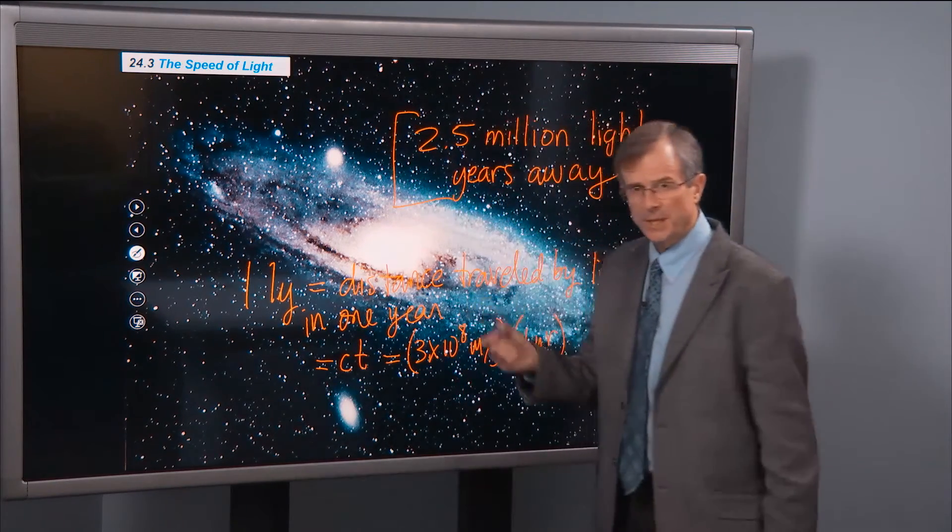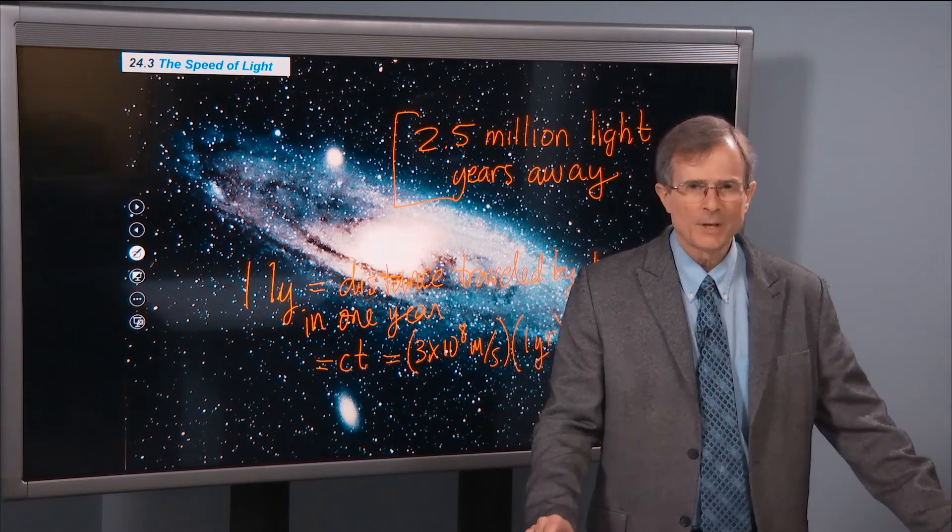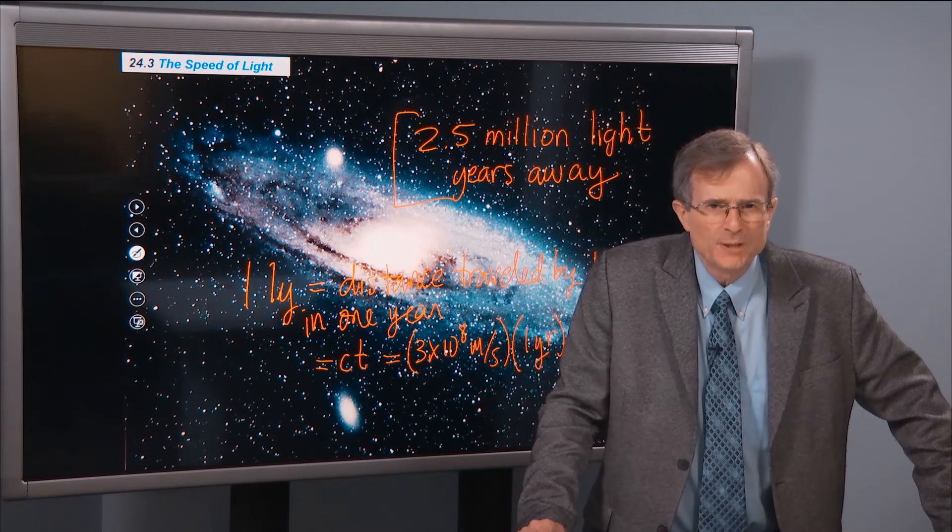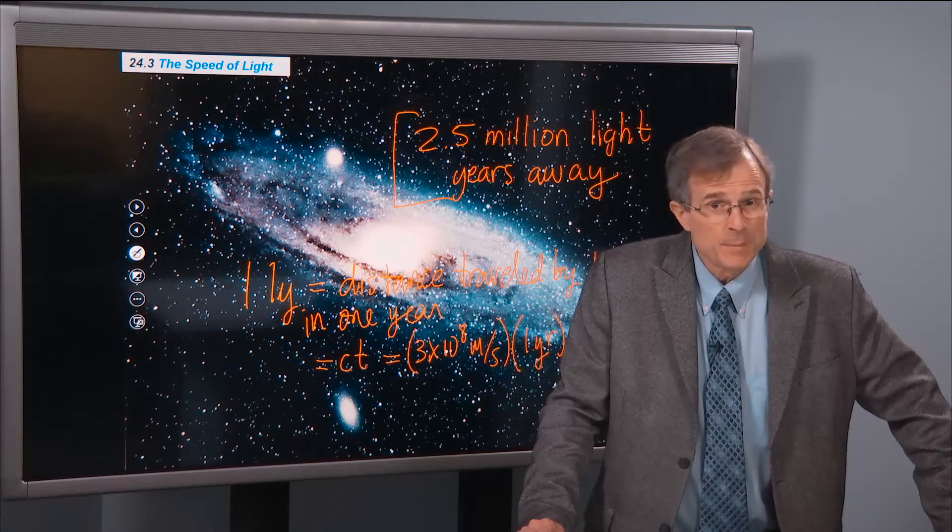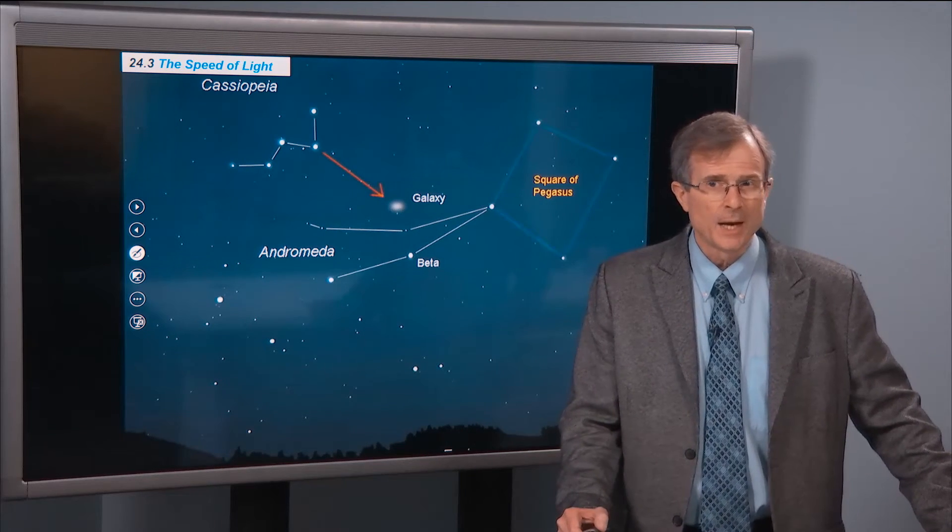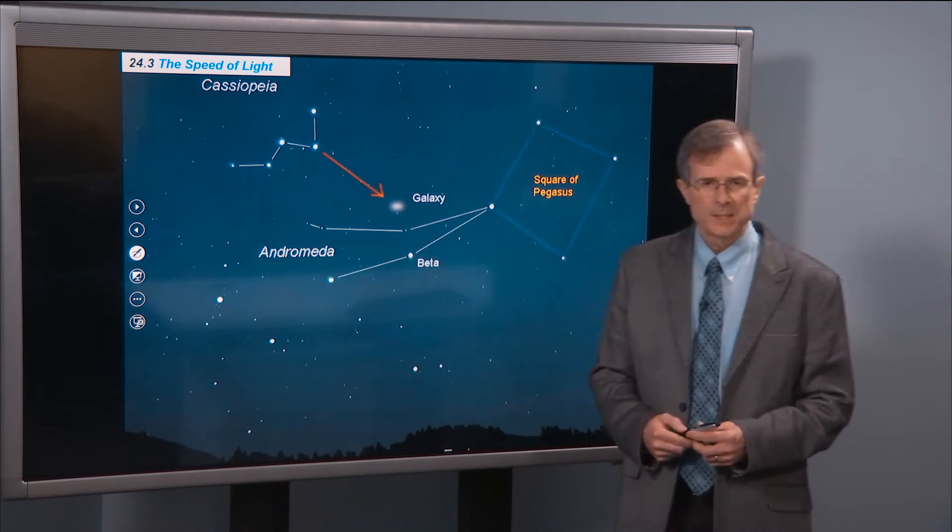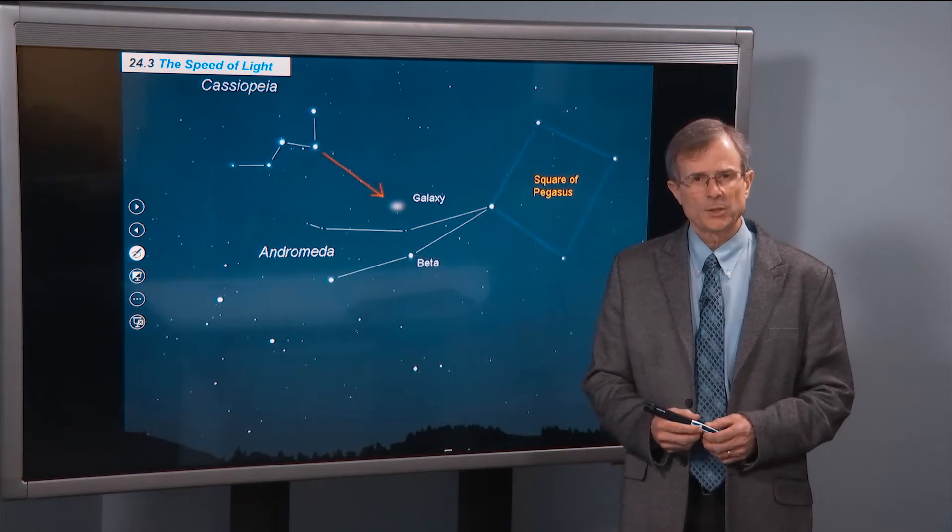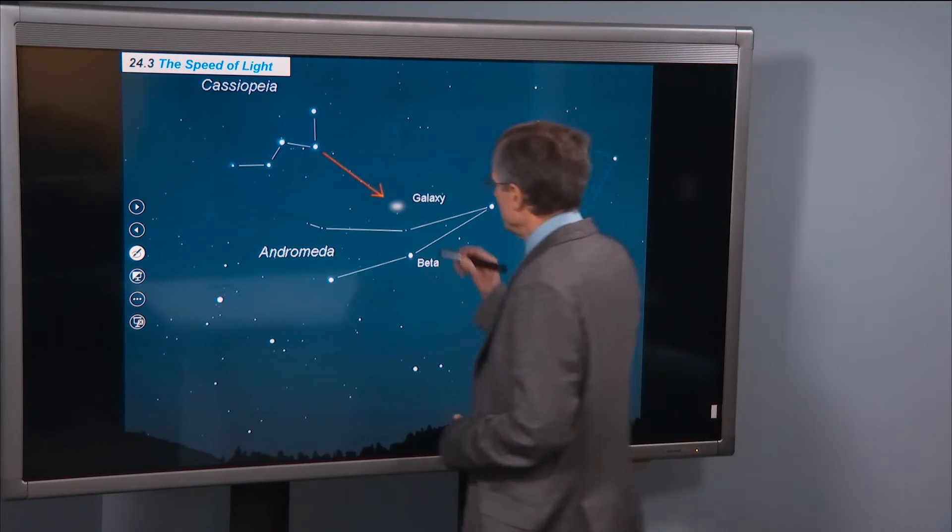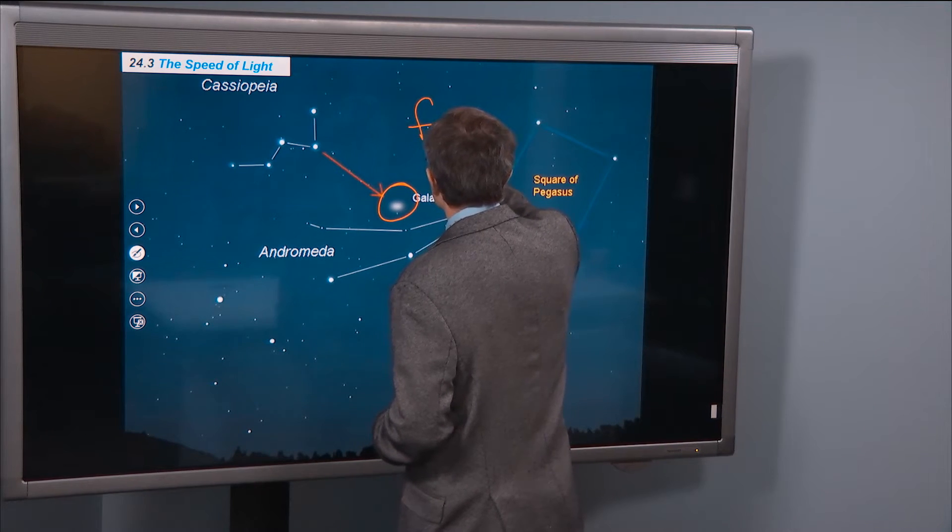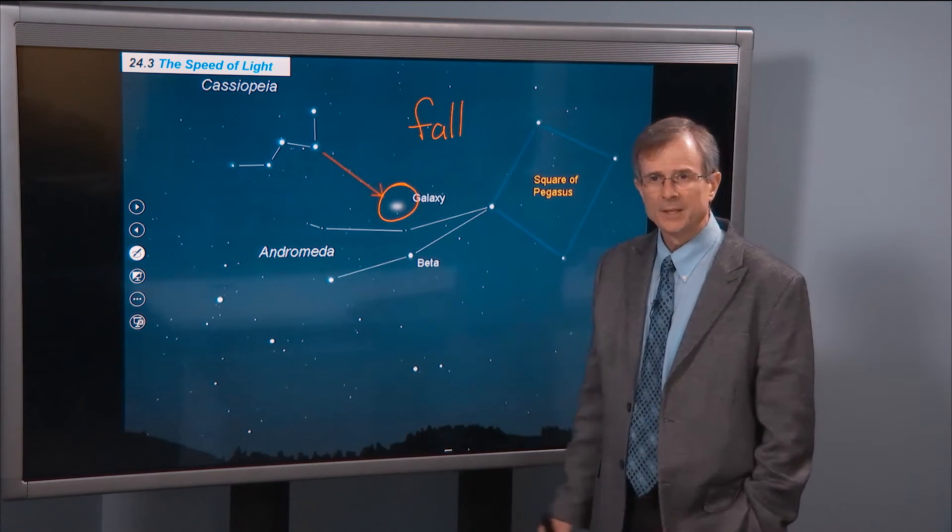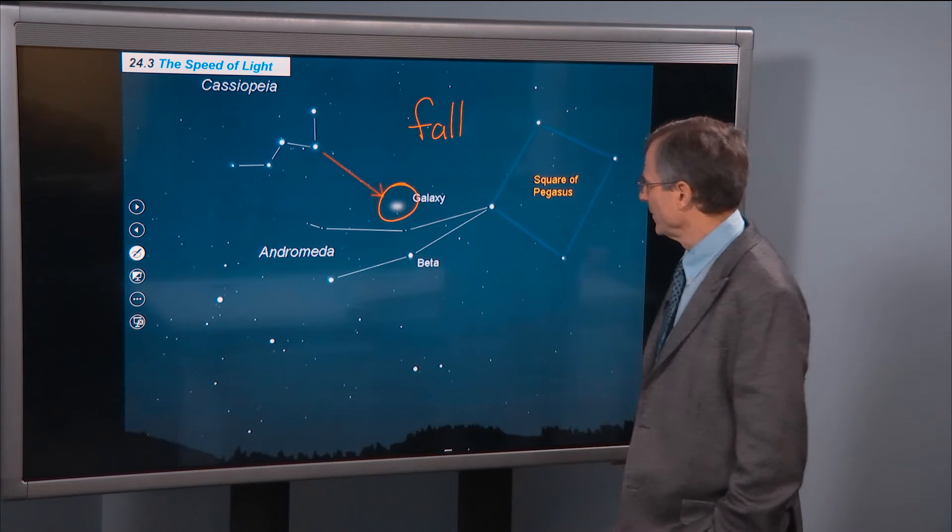So when we view the Andromeda Galaxy, we are seeing it as it existed 2.5 million years ago. That's amazing, especially given that you can actually see this galaxy with your naked eye. Far and away, the Andromeda Galaxy is the most distant object that you can see with your naked eye. If I get some of you out on a dark night, I can show it to you. But it's visible in the fall, in evenings in the fall. So next August, when it's nice and warm, get out with somebody you care about and look for the Andromeda Galaxy.